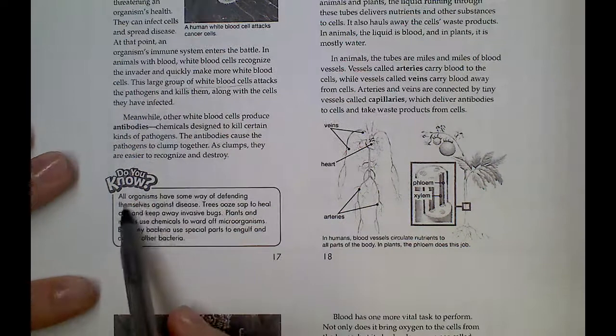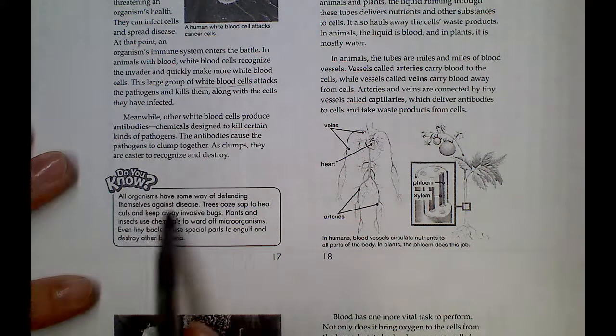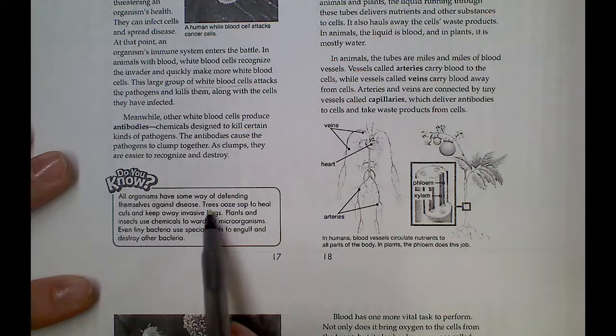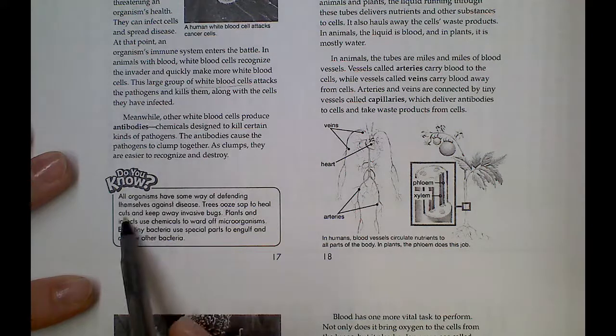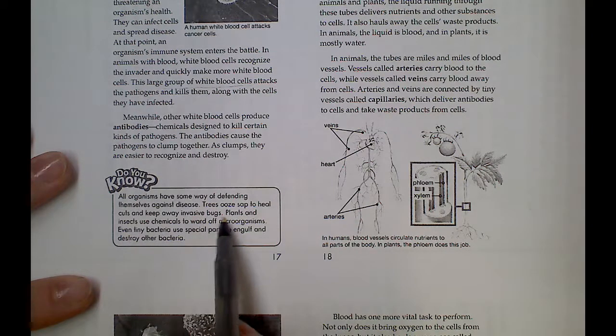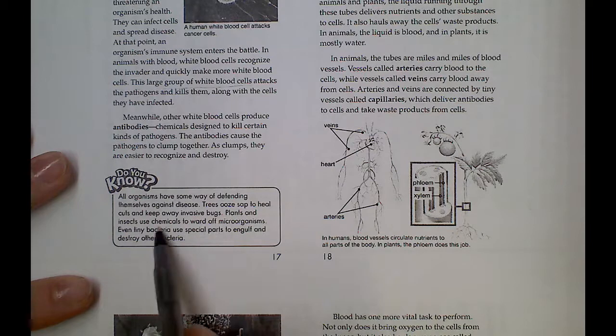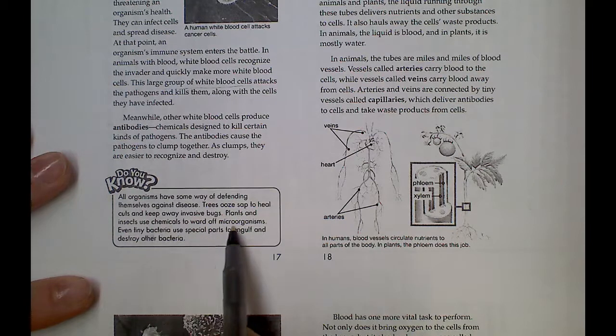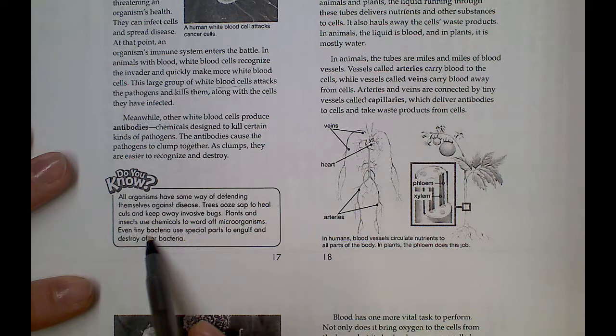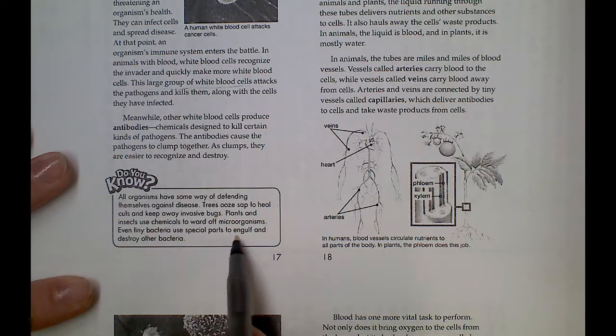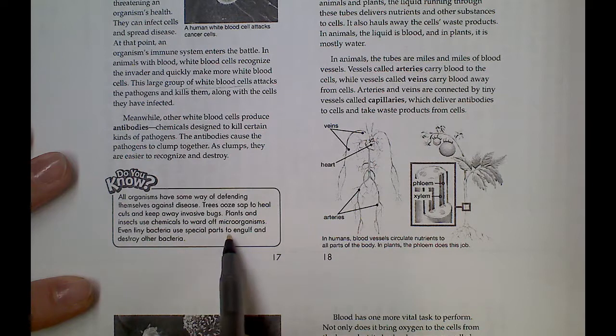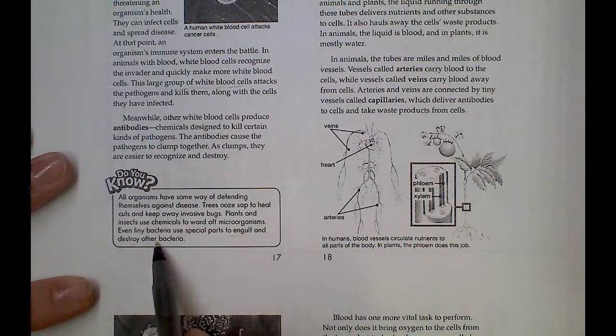Did you know? All organisms have the same way of defending themselves against disease. Trees ooze sap to heal cuts and keep away invasive bugs. Plants and insects use chemicals to ward off microorganisms. Even tiny bacteria use special parts to engulf and destroy other bacteria.